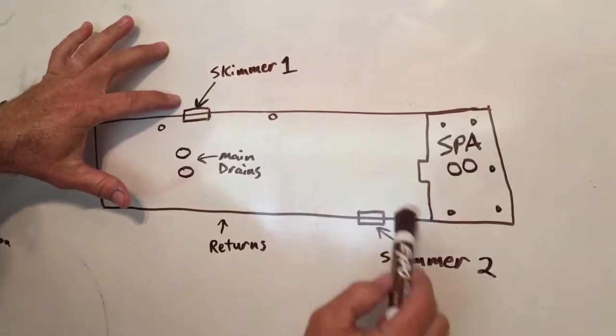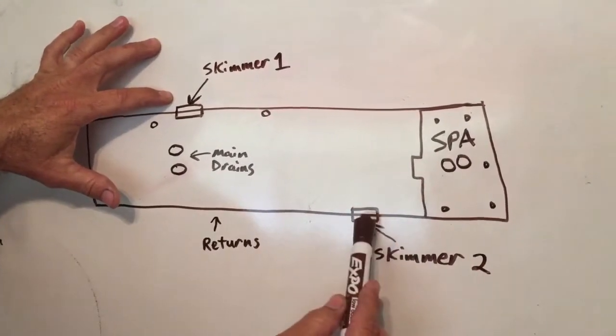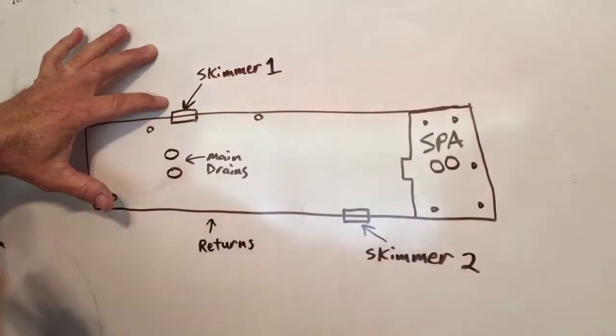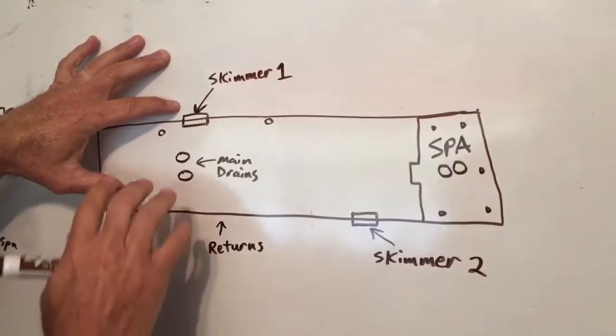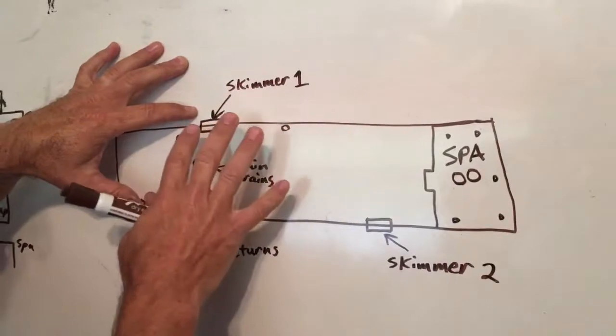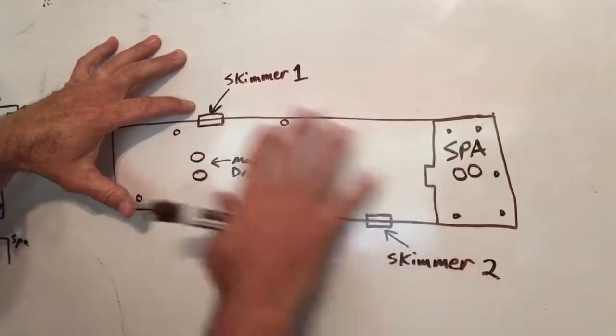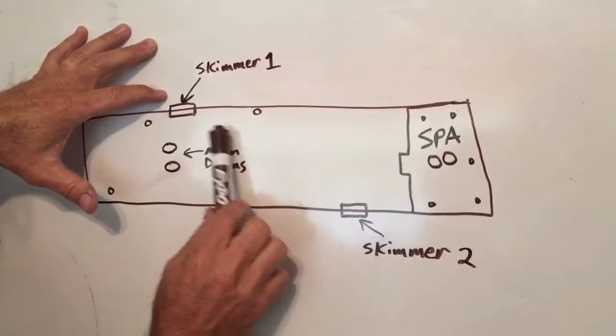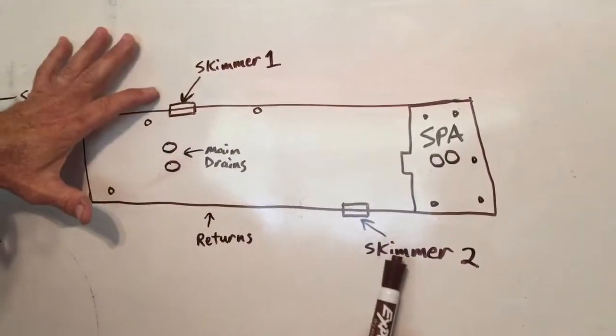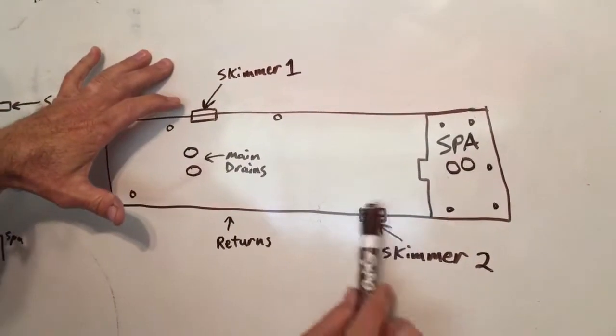The skimmers are the rectangular openings on the side of the pool, and that skims the top part of the water. It brings the leaves and debris that fall on the surface of the water. It brings it in there and tries to help keep the pool cleaner by, while it's still floating, the surface tension of the water, it brings it into there and then puts it in some baskets that are in the skimmer.